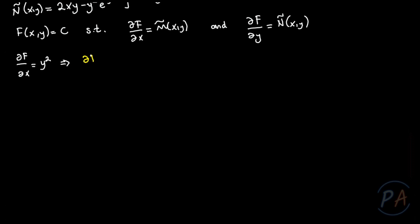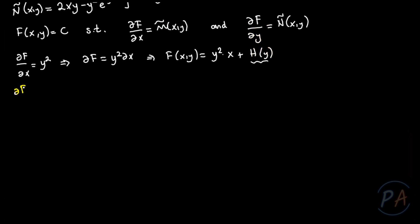So ∂f = y²·∂x, and integrating both sides I determine f(x,y) = y²·x plus a generic function h(y). I still don't know the exact value of h(y), but I can determine it by using the condition ∂f/∂y = Ñ(x,y): differentiating gives 2xy plus dh/dy, which must equal Ñ = 2xy minus y²·e^y.